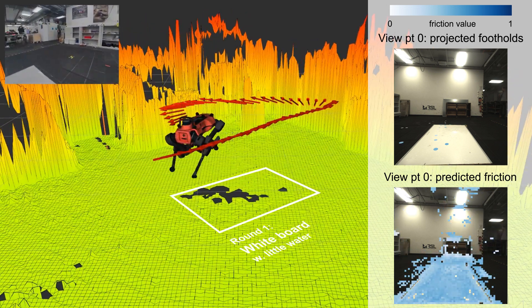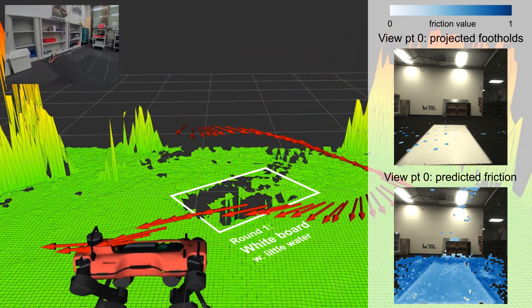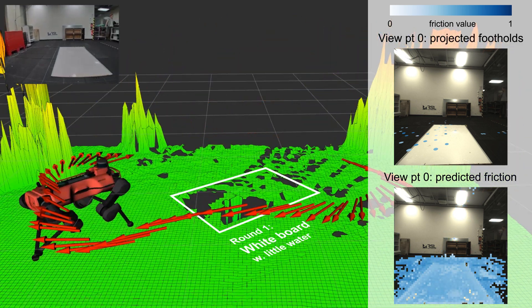When moving forward, footholds from the white board to the ground will be projected to the camera image domain one after another. The confidence mask region changes accordingly.